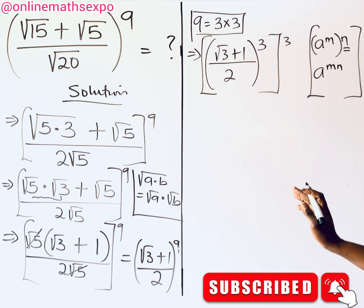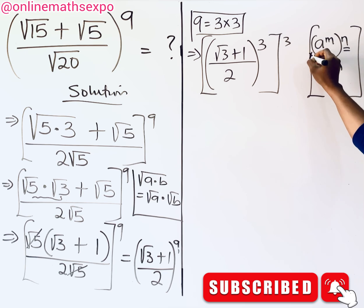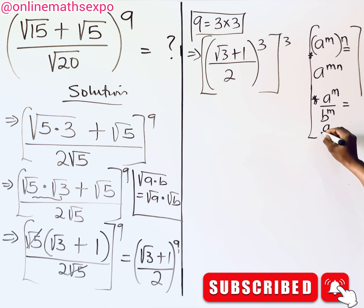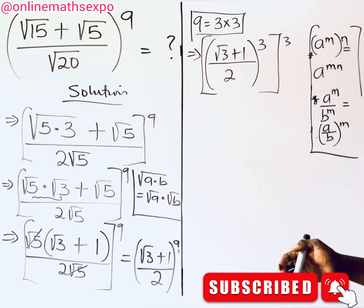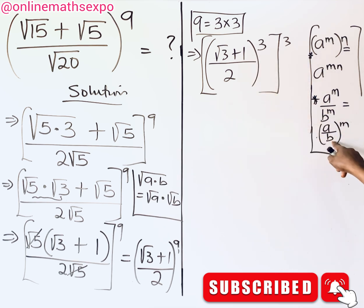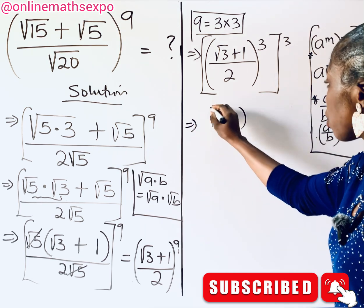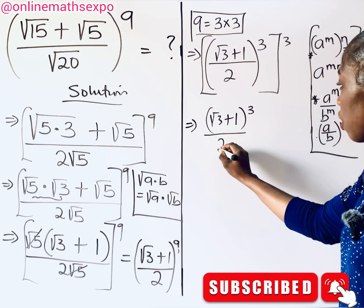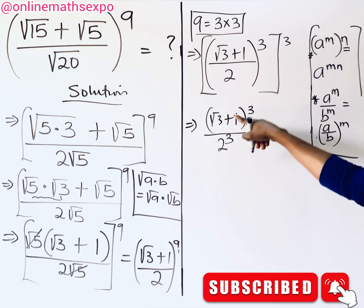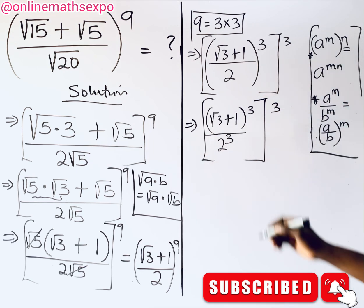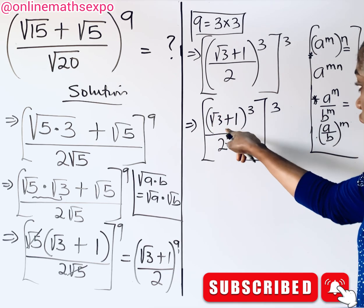Also remember the exponent rule: (a/b)^m = a^m / b^m. Applying this, we have (√3 + 1) raised to the power of 3, divided by 2 raised to the power of 3, and all of that is then raised to the power of 3 again. Now we need to expand the binomial (√3 + 1)^3.